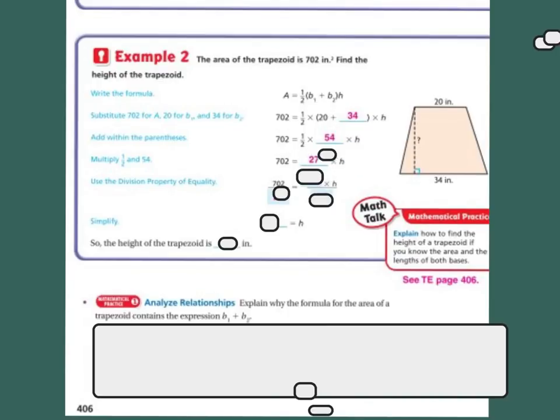So 20 plus 34 is 54. Okay, so now divide that by half. 54 divided by half is 27. And then to isolate the H, I'm going to multiply or divide both sides by 27, right? So if I divide both sides by 27, I get rid of, because remember, we're isolating the variable. I get rid of this, and I'm left with just my H on this side. And 702 divided by 27 is 26, so my height is 26.